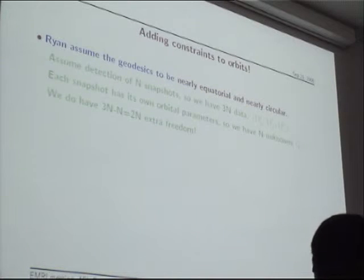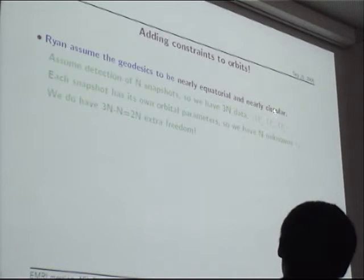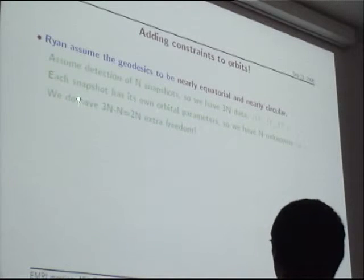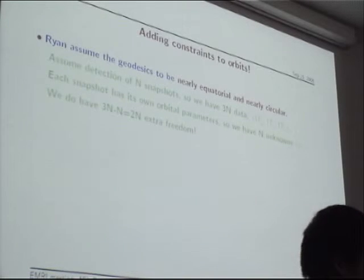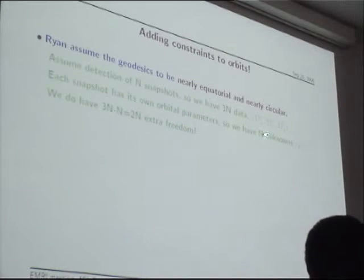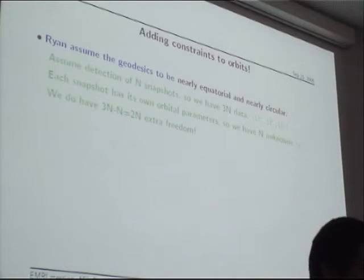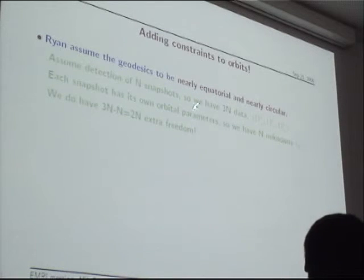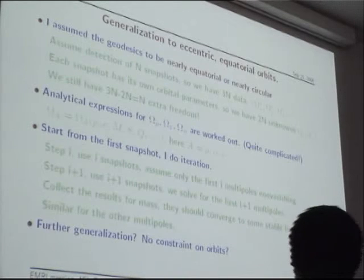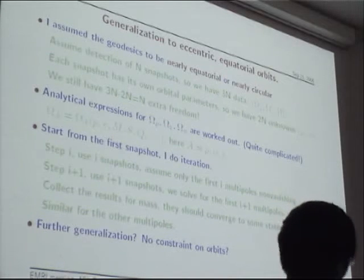Why did Ryan succeed? Ryan gave some constraints to the problem. He assumed the orbits to be nearly equatorial and nearly circular, which decreases the number of orbital parameters. Within each snapshot, he only needs to use the radius to denote that orbit — one unknown orbital parameter per snapshot. Now we have two extra degrees of freedom per snapshot, from which we can extract the spacetime information. It's straightforward to generalize Ryan's idea to more complicated systems, for example, to eccentric equatorial objects. Assuming the geodesic lies in the equatorial plane, we have an extra degree of freedom to extract spacetime information.